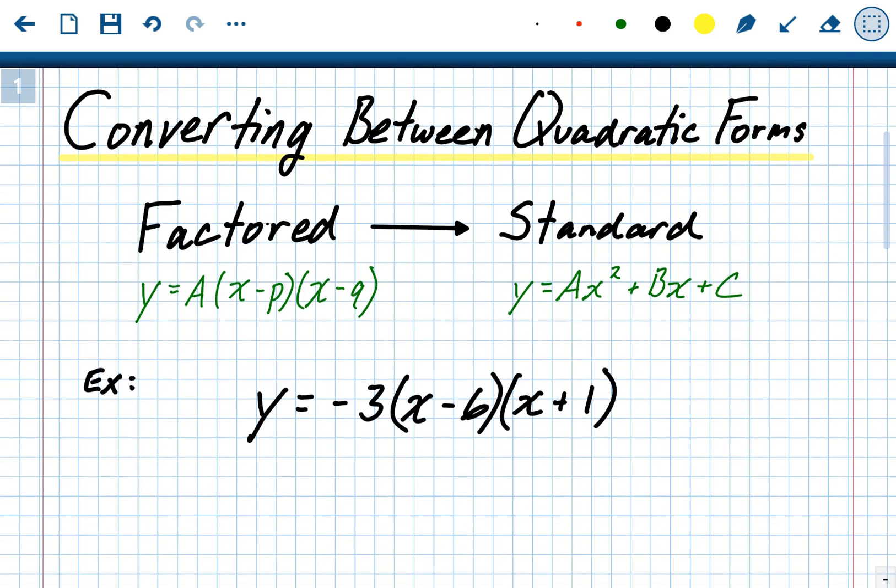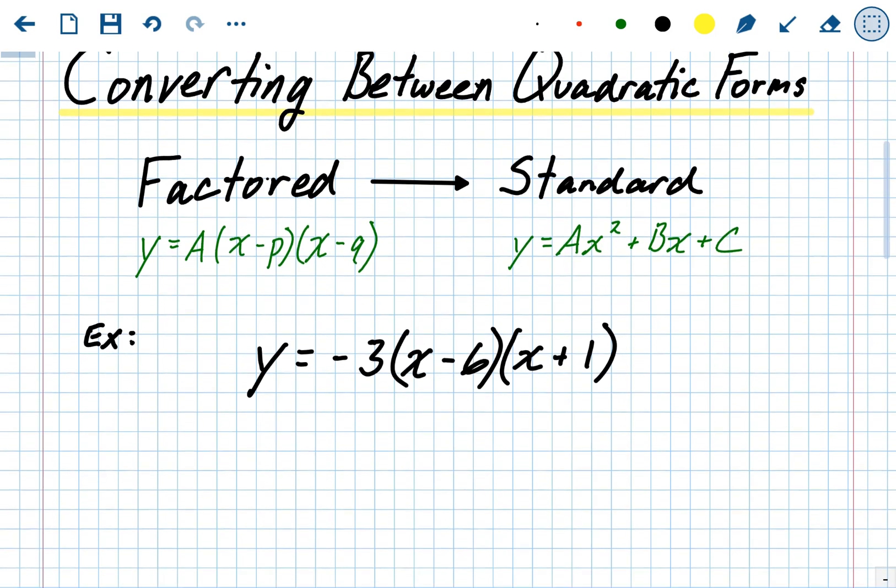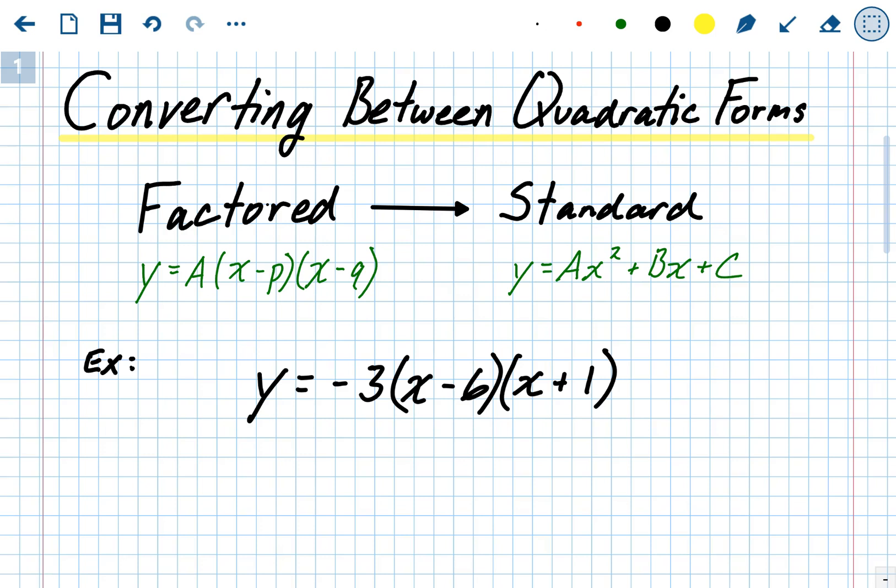Factored form, again, A times X minus P times X minus Q, and we're going to convert that into AX squared plus BX plus C of standard form. One thing to notice again, the A values. The A values are always going to stay the same.